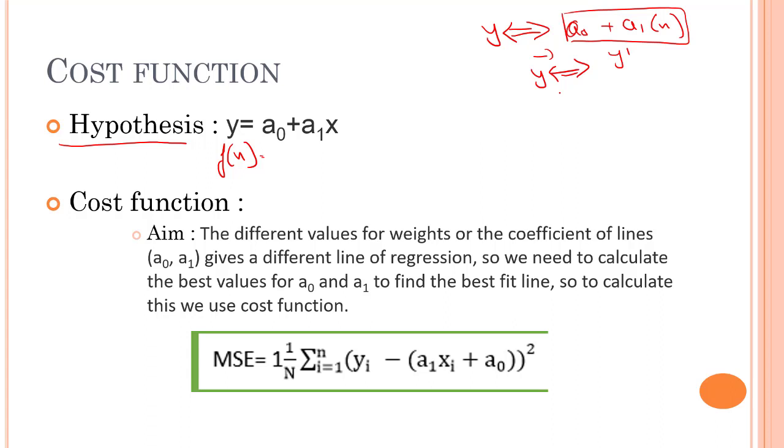Now, how can we say that those are quite nearby? That is where the cost function helps us. The different values for the weights or the coefficient of line gives different line of regression. So cost function optimizes the regression coefficient or the weights. These are also known as weights, a0 and a1 are also known as weights.